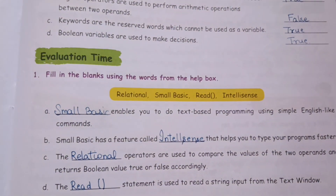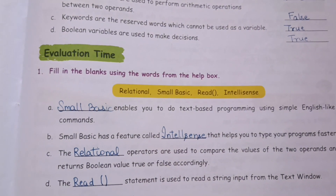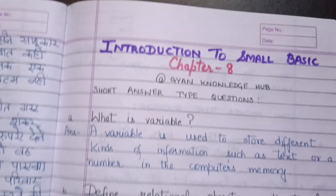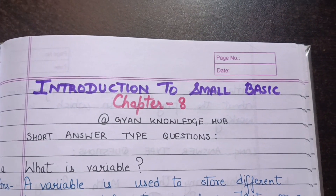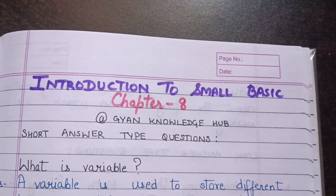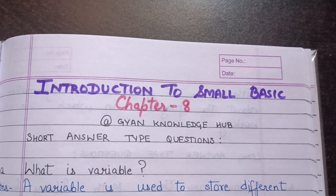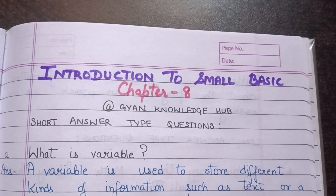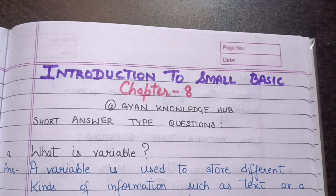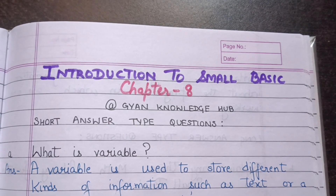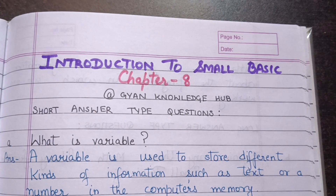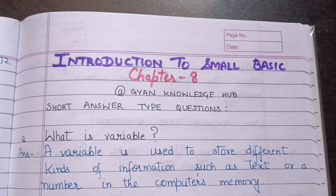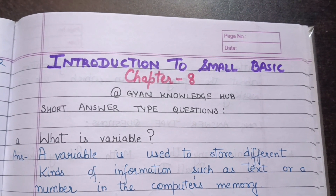This is all for the back exercises. Now we'll discuss the question answers. First question: What is a variable? A variable is used to store different kinds of information such as text or a number in the computer's memory.